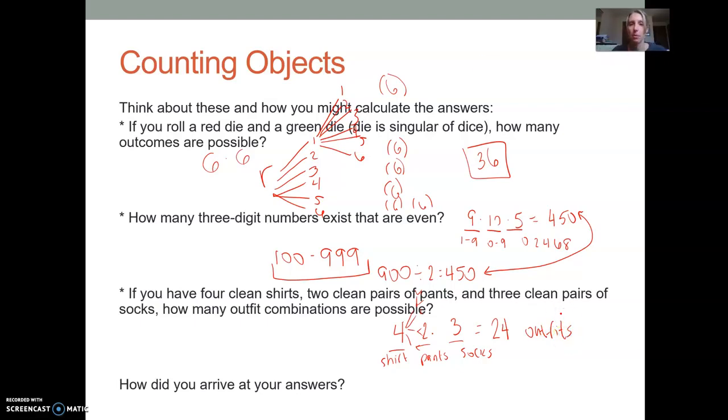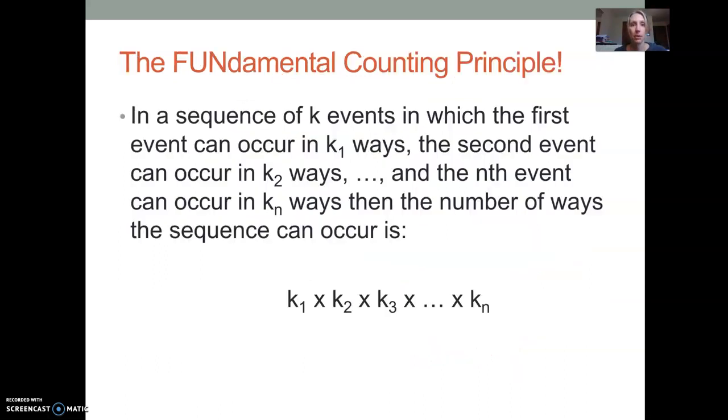All three of these, when we did the multiplication, the six times six, the nine times 10 times five, the four times three times two, that is the fundamental counting principle. So what it says is in a sequence of k events in which the first event can occur in k sub one ways, just meaning there's k sub one possibilities. So like for the shirt question, there were four possibilities. The second event can occur in k sub two ways and on and on. Then the number of ways that we can make arrangements would be k sub one times k sub two times k sub three, blah, blah, blah, times k sub n. So sometimes it's called the multiplication principle.